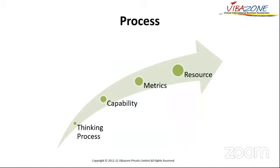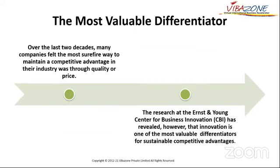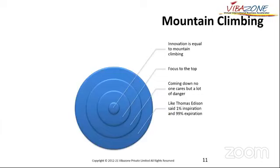The process of innovation requires thinking processes, capability, matrices, and resources. The most valuable differentiator — often people believe — is to reduce price or cost, but that's not what studies found. Companies which are ahead are those who continue to innovate and have a competitive advantage. Innovation is equal to mountain climbing: it focuses on the top, and coming down no one cares, but there's a lot of danger. As Thomas Edison says, it's 1% inspiration and 99% exploration. That is what innovation amounts to.